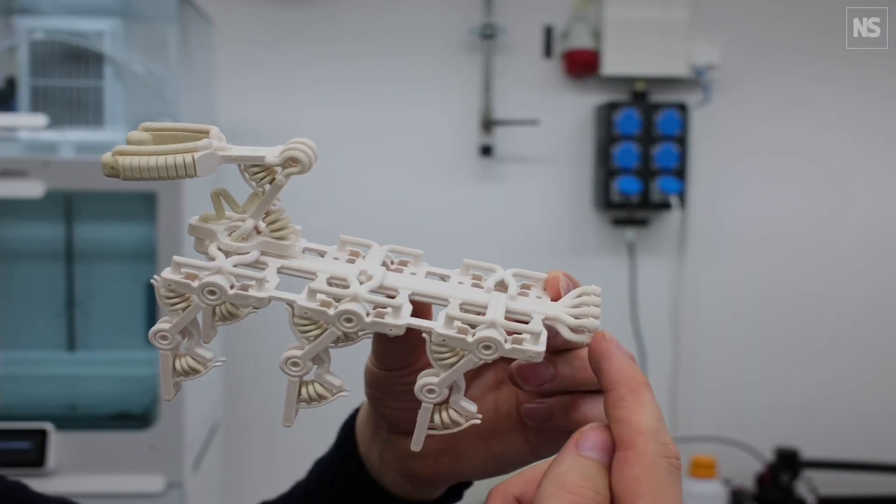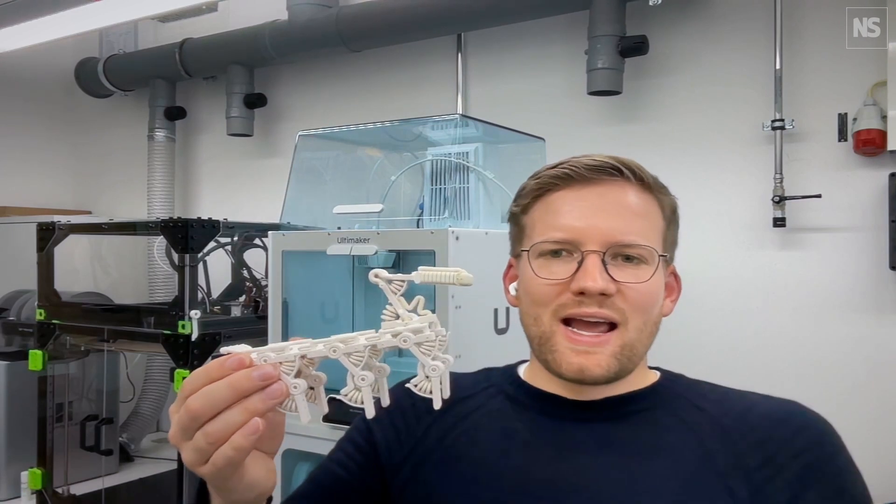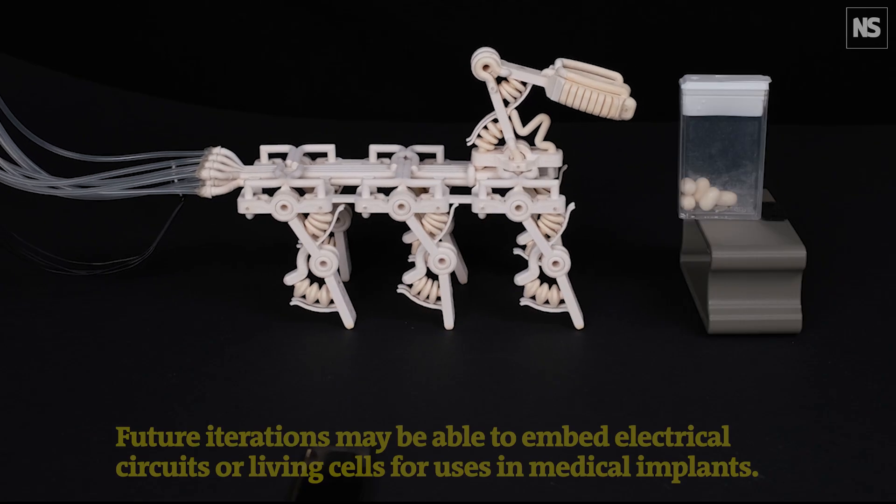And then we add the pressure supply lines and the pressure sensor, and we immediately have a functional walker that can walk and grasp objects.